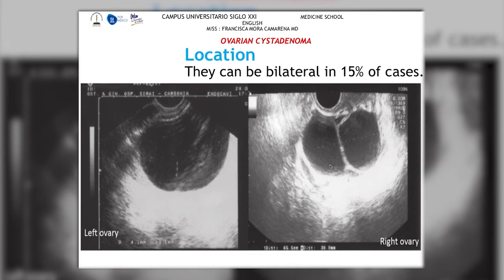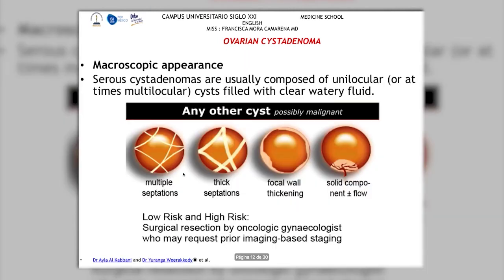Regarding location, cystadenomas can occur in either the left ovary, the right ovary, or both. In about 15% of cases we can find cysts in both ovaries, but usually — in about 85% of cases — it is only one cyst. We must always consider that they can be bilateral.